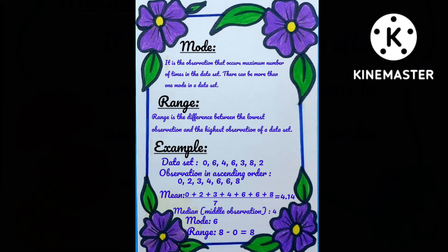The next one is mode. It is the observation that occurs maximum number of times in the data set. There can be more than one mode in a data set. After that, range. Range is the difference between the lowest observation and the highest observation of a data set.